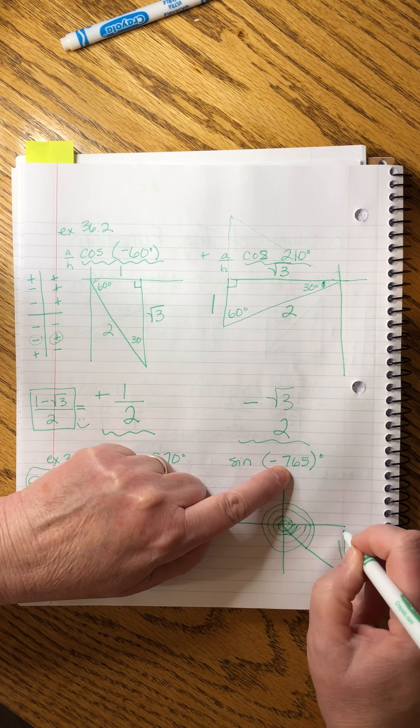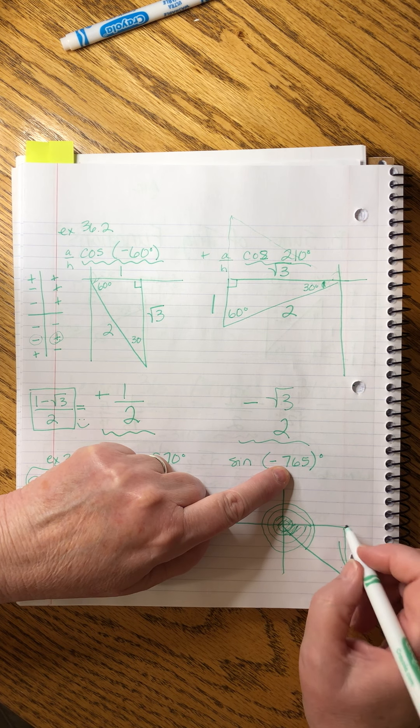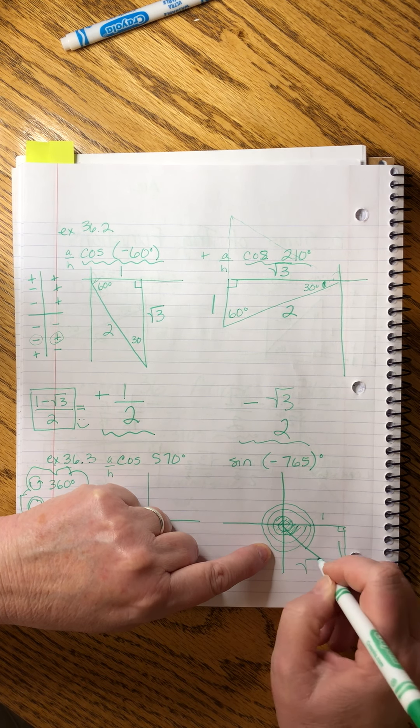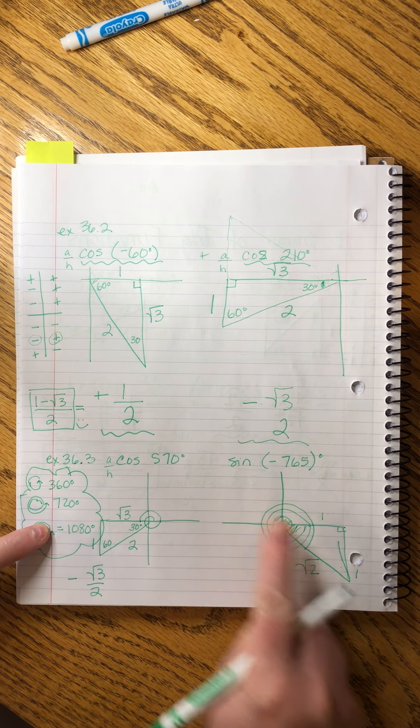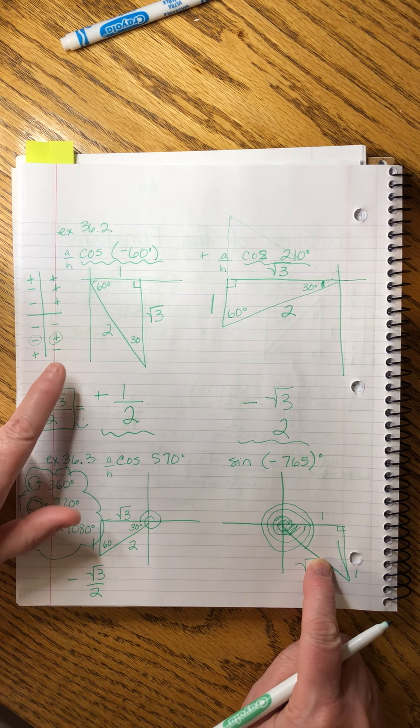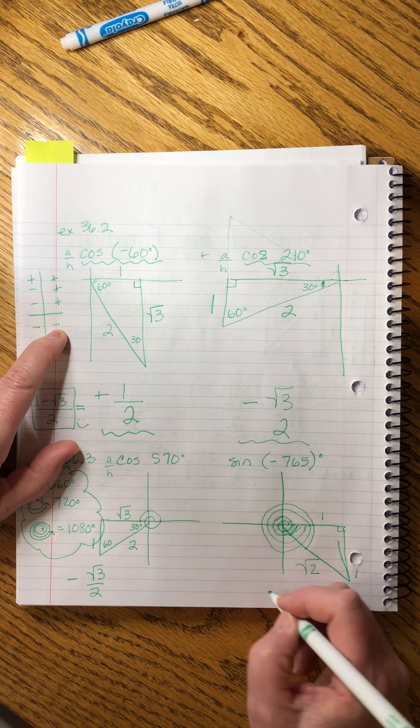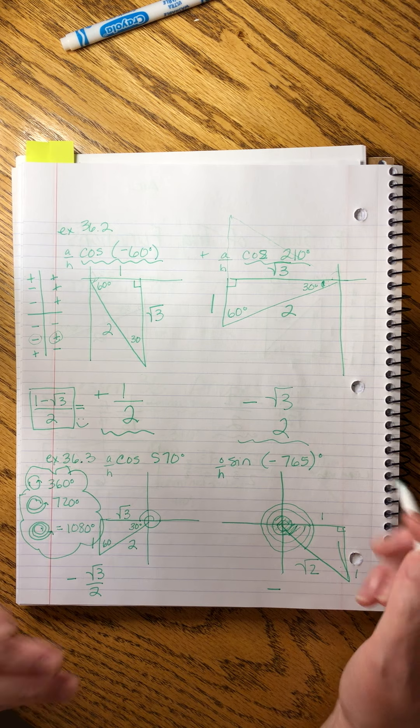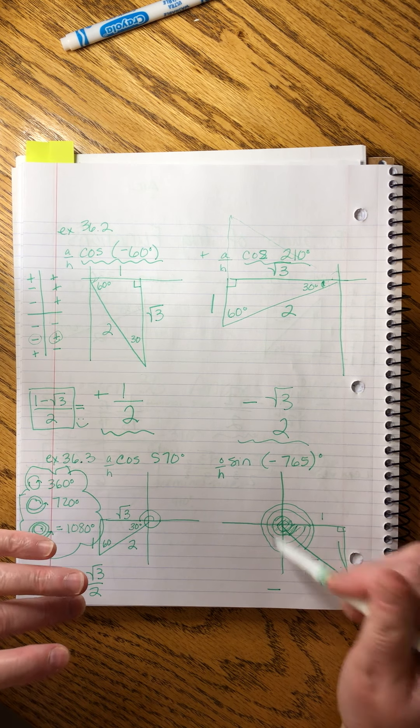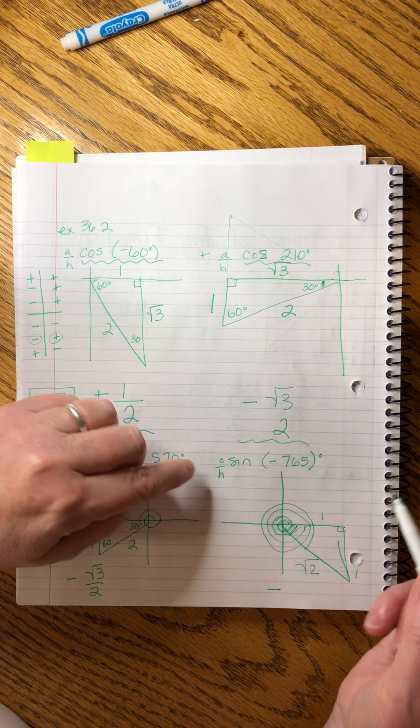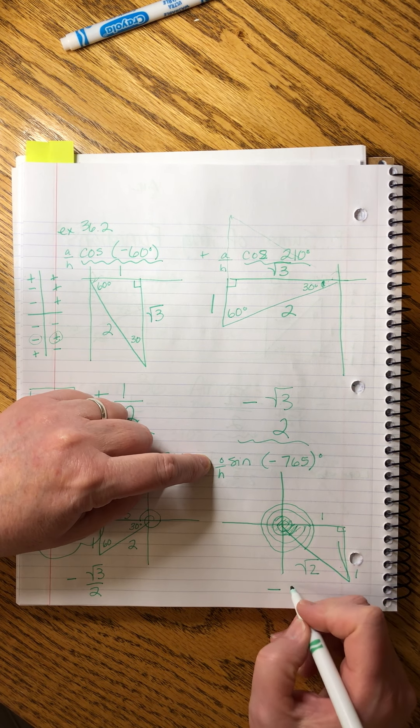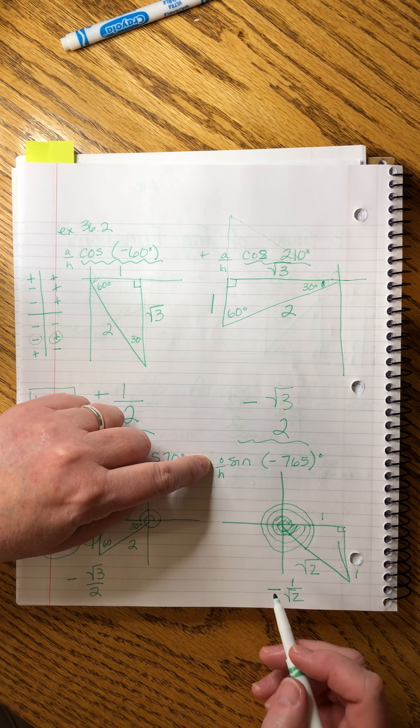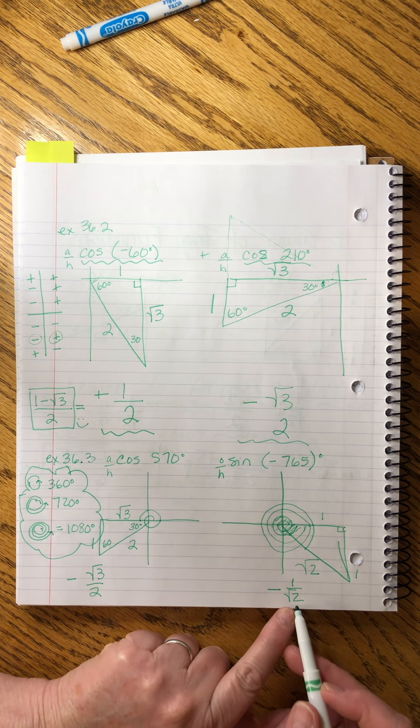So what I have here is a 45, 45, 90. I have one, one, square root of two. Sine in the fourth quadrant, that's negative. And sine is Oscar had a... Sine and cosine are the same on these triangles, but I always like to just keep my head straight. So it's one over the square root of two. Negative one over the square root of two.